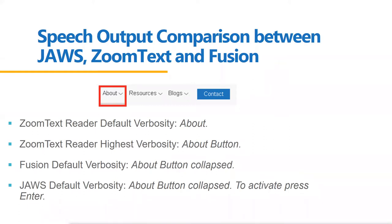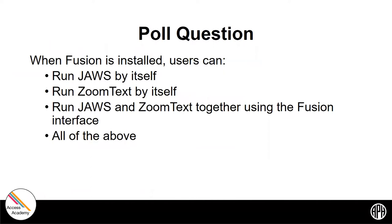As Ben switches to his virtual machine for demonstrations, we'll put up our next poll question. The question: when Fusion is installed, users can do which of the following? Run JAWS by itself? Run ZoomText by itself? Run JAWS and ZoomText together using the Fusion interface? Or all of the above? Please type any questions you have in the chat.